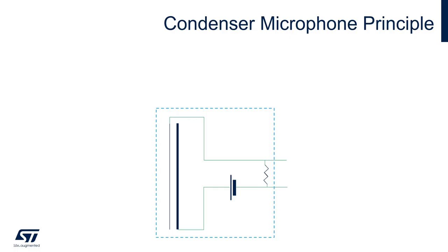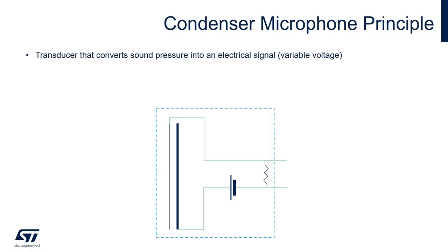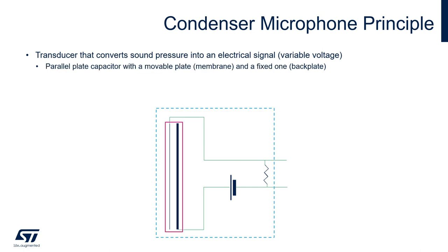Generally speaking, a microphone is a transducer that converts sound pressure into an electrical signal. The main components of a microphone are a capacitor with a fixed plate, the backplate, and a movable one, called the membrane.